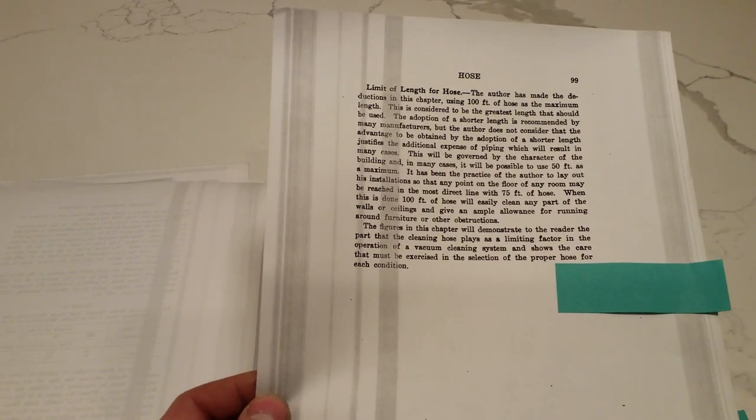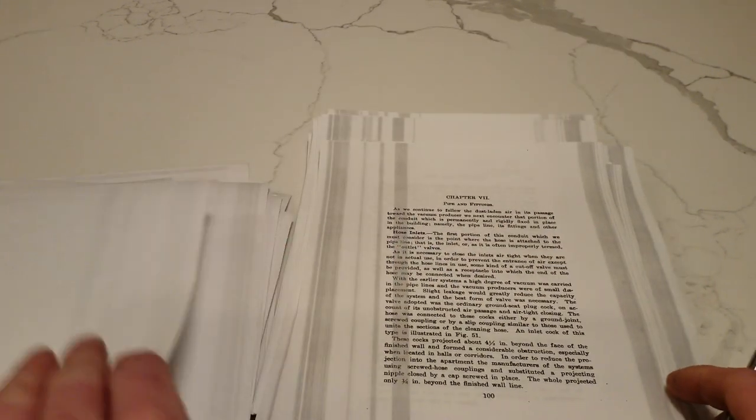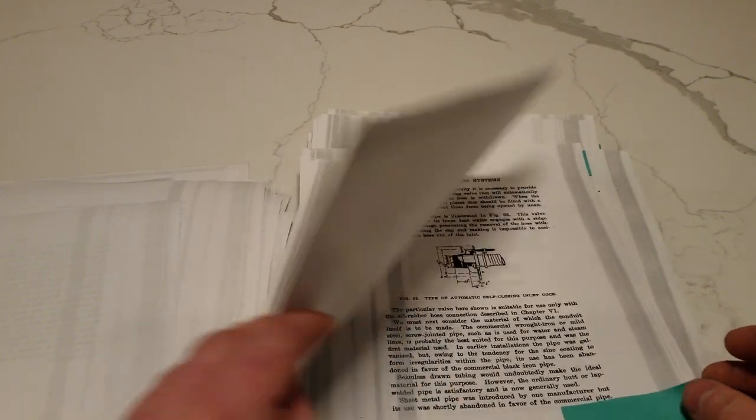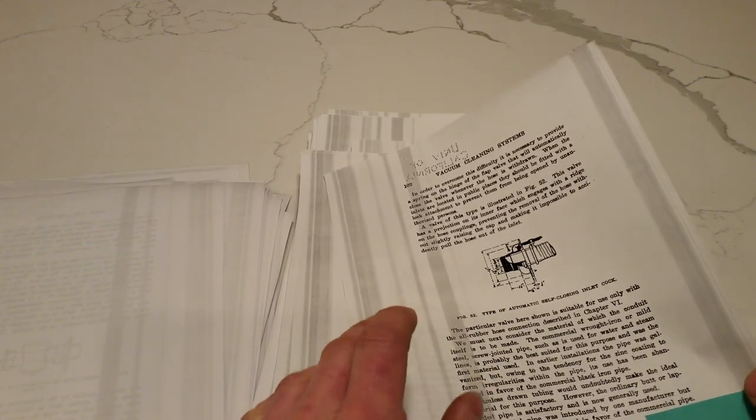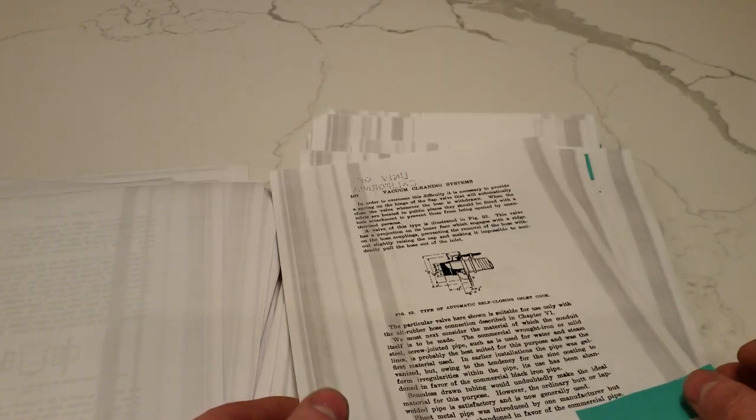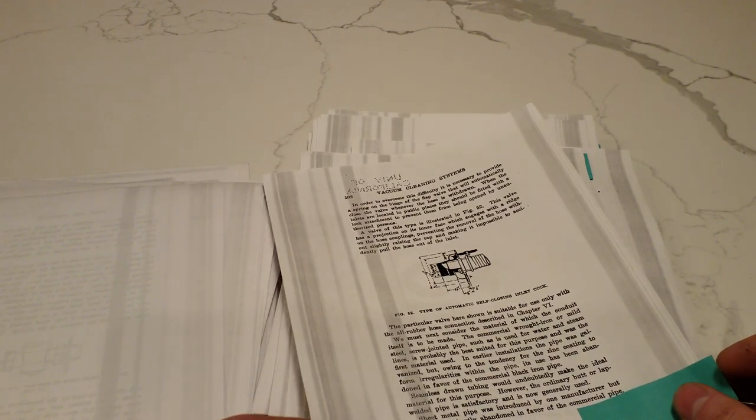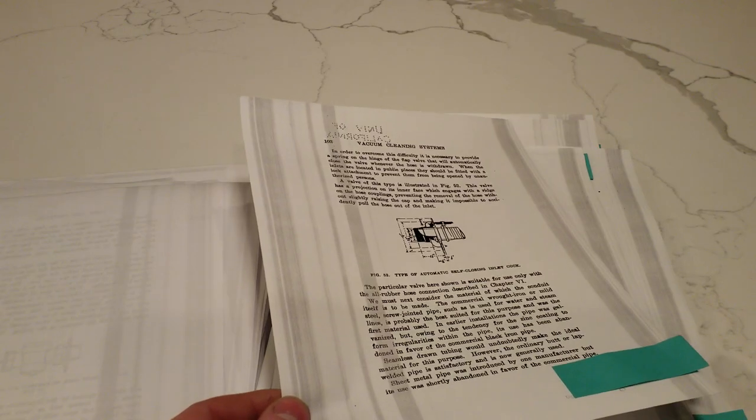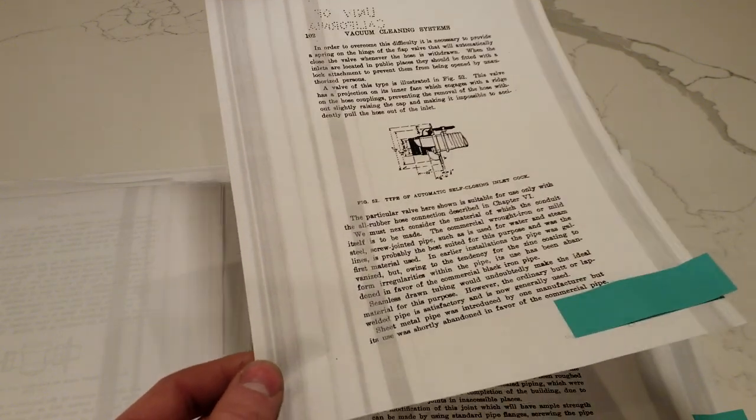And, this is the opposite of what a company like Spencer would say. And, I've got a little Spencer booklet that says the hose is the greatest restriction and wears out the quickest and is the hardest thing to move around. And, so Spencer said it is obvious that plenty of piping and inlets should be used and a shorter hose.